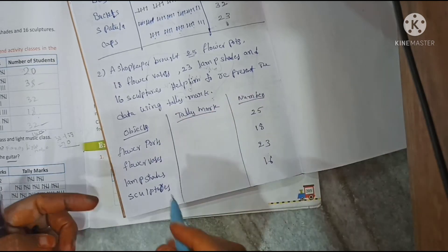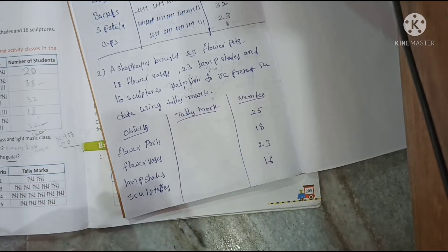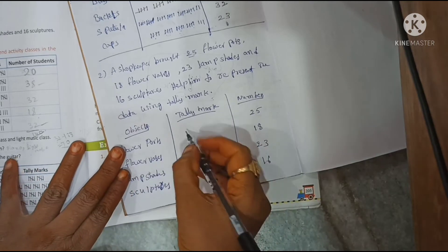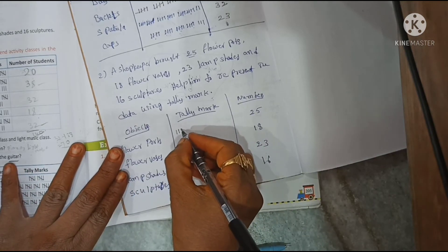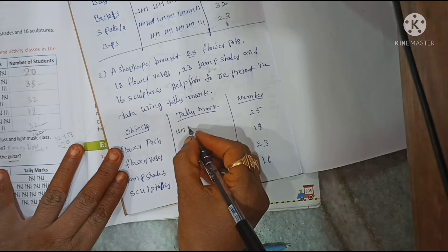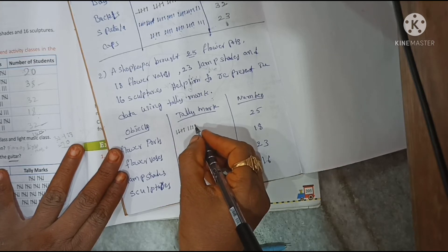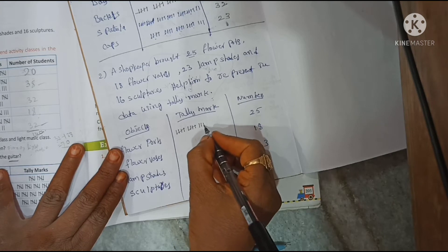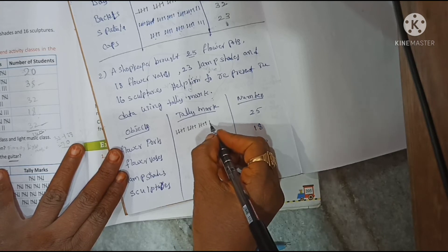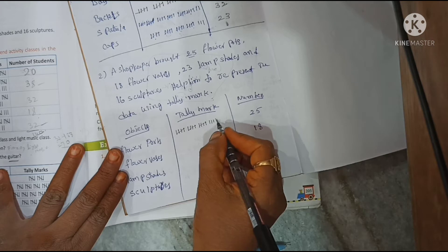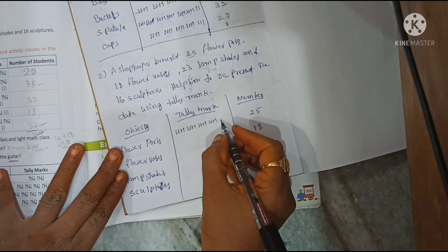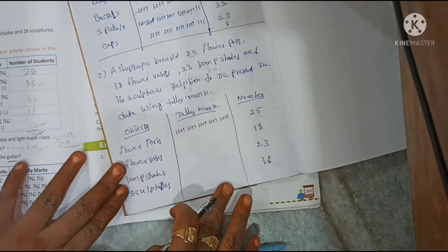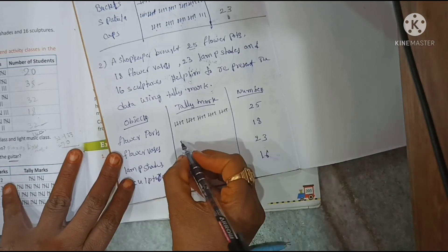Drawing tally marks for twenty-five: groups of five — 5, 10, 15, 20, and then five more makes 25. For eighteen: groups of five — 5, 10, 15 — then 16, 17, 18.